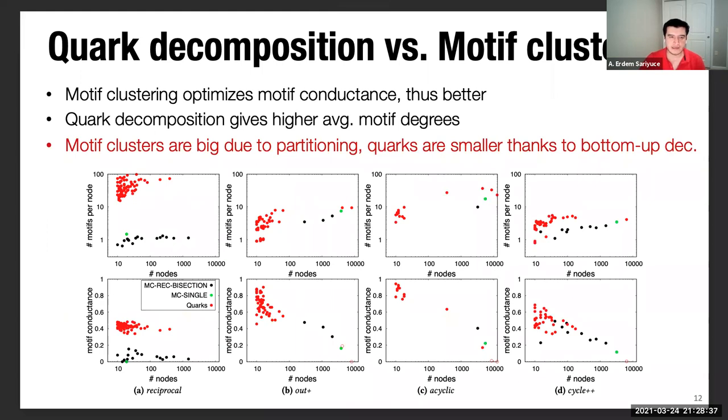In our comparisons, we use several metrics. With respect to the motif clustering, which basically optimizes the motif conductance, we compared our results with the motif conductance and also the average motif degree. As expected, motif clustering gives pretty good results for conductance. Quark decomposition, on the other hand, gives smaller subgraphs, but with a higher average motif degree.